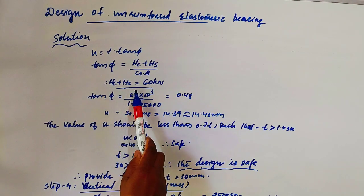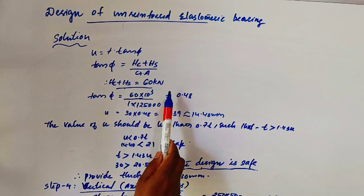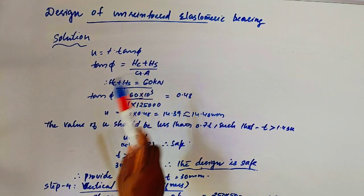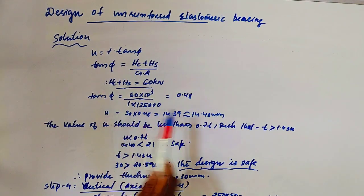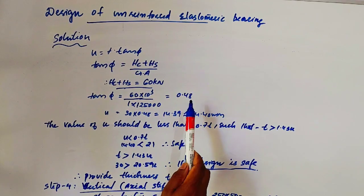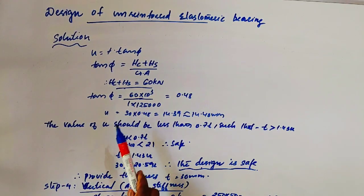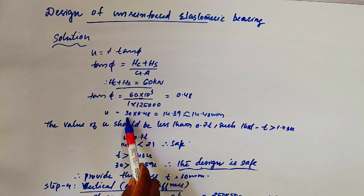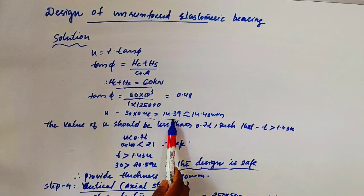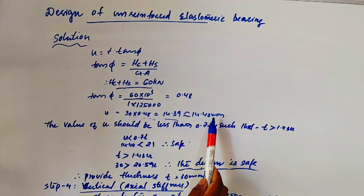Where tan 5 equal to HC plus HS divided by G into A. HC plus HS is the horizontal force, 60 kN. Substituting the value, tan 5 equal to 0.48. Then U equal to T into tan 5, that is 30 into 0.48, which is 14.40 mm.